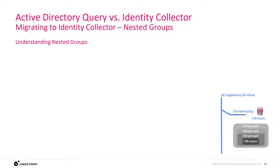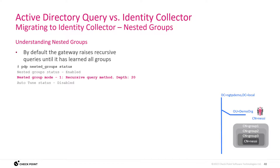Nested groups are groups within a group. You can see here that the common name Nessie is part of group 3, which is part of group 2, which is part of group 1. By default, for every group membership one query will be made, and this continues by default until a depth of 20. This has an impact on the logon server that receives the query and on the PDP that runs it. Keep in mind that if you have multiple login events per second, this may be a problem.